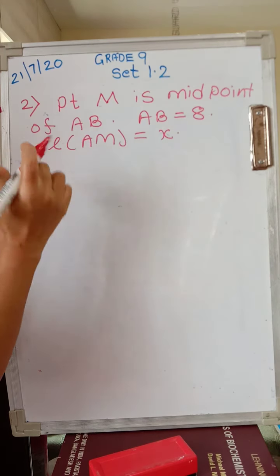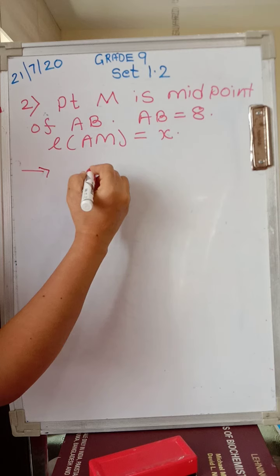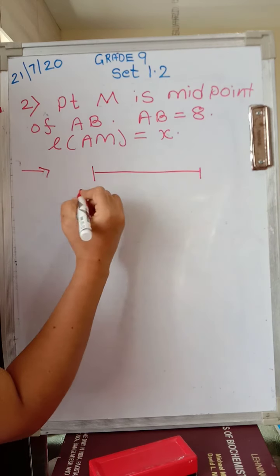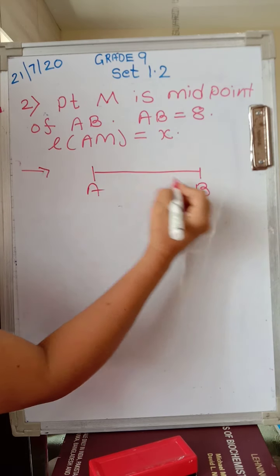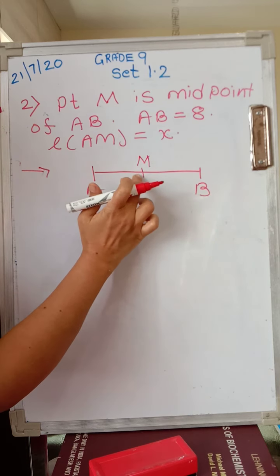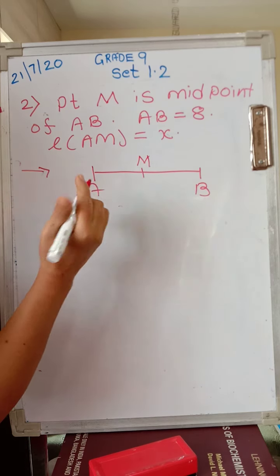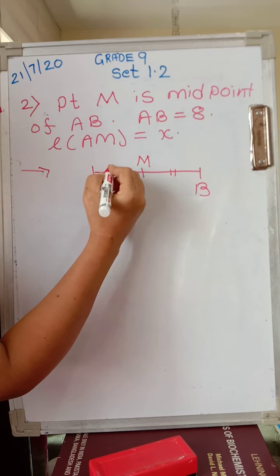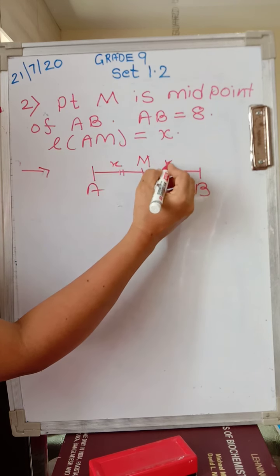Point M is the midpoint of AB. First, let's draw segment AB. Since M is the midpoint, AM will be equal to MB. So this length equals this length. Let's suppose this is X and this is X.